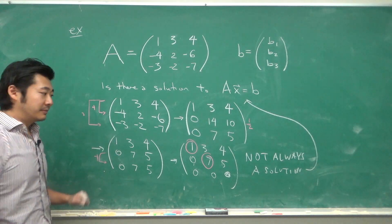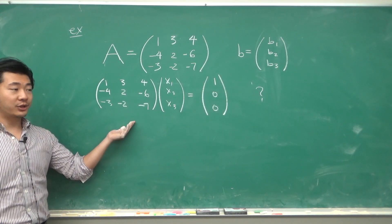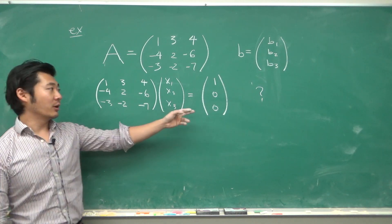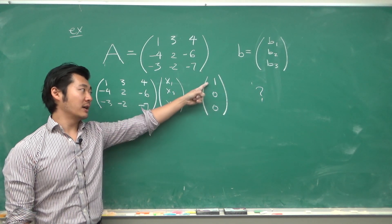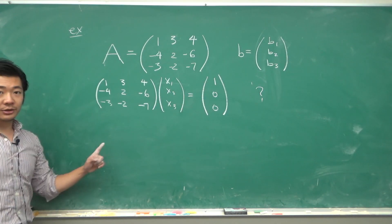For example, let's see if we can find the solution to this matrix equation where the vector B is [1, 0, 0].